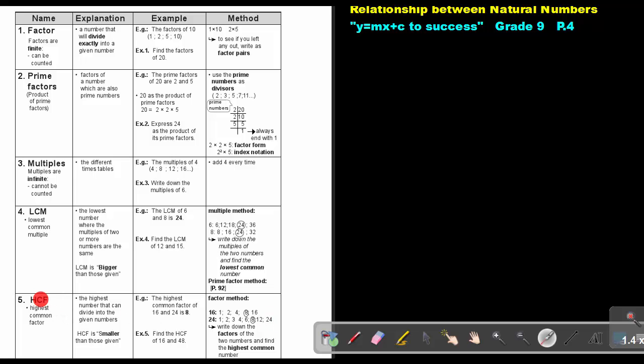And now you're going to write the highest common one. So 1 is common. 2 is common. 4 is common. But the highest common one will be 8. So write down the factors of the two numbers and find the highest one. And that will be 8.